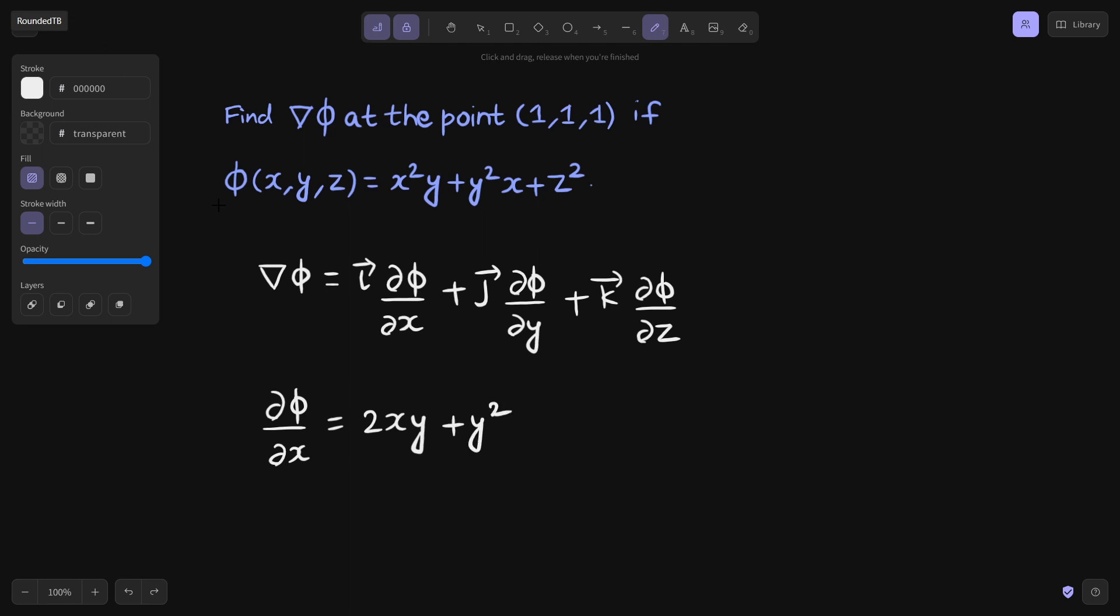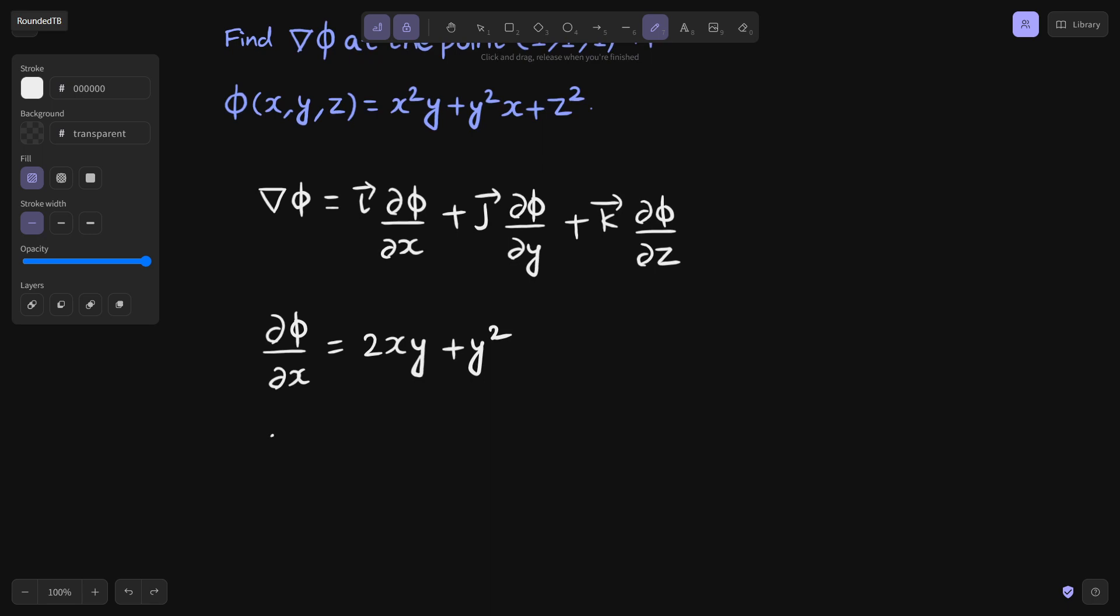Similarly, if you find ∂φ/∂y, this is partial derivative with respect to y. From the first term, x² is as it is and derivative of y is 1. In the second term, derivative of y² is 2y, x as it is, and derivative of z² is 0.